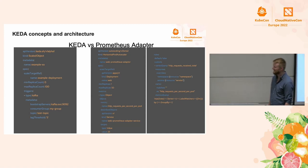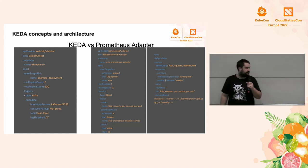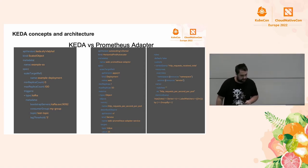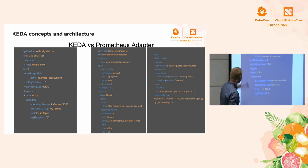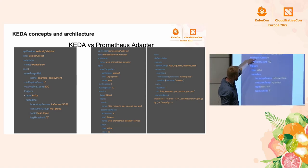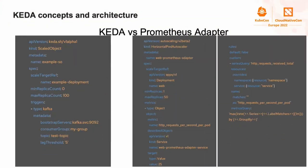Just to show the ScaledObject again: as you can see, it's pretty simple. You define the scale target — if you don't specify the API or kind, it defaults to Deployment, but you can target custom resources like Argo Rollouts by specifying the API version and kind. Then you define minimum and maximum replicas and the triggers section. It's just a couple of lines.